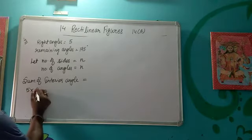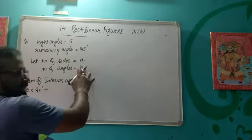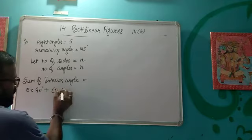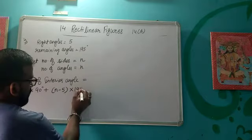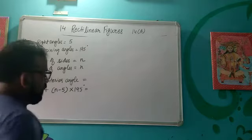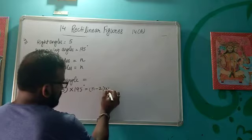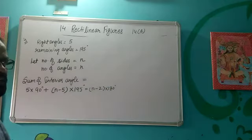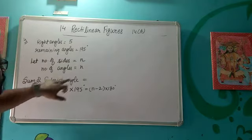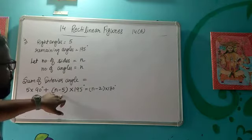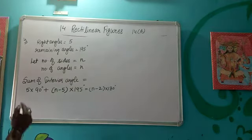Five right angles are there, so five into 90 degrees plus — total n angles are there, so n minus five angles are left. Each remaining angle is equal to 195 degrees. The sum of all interior angles is n minus 2 into 180 degrees. So this will be our required equation: 5×90 + (n−5)×195 = (n−2)×180.